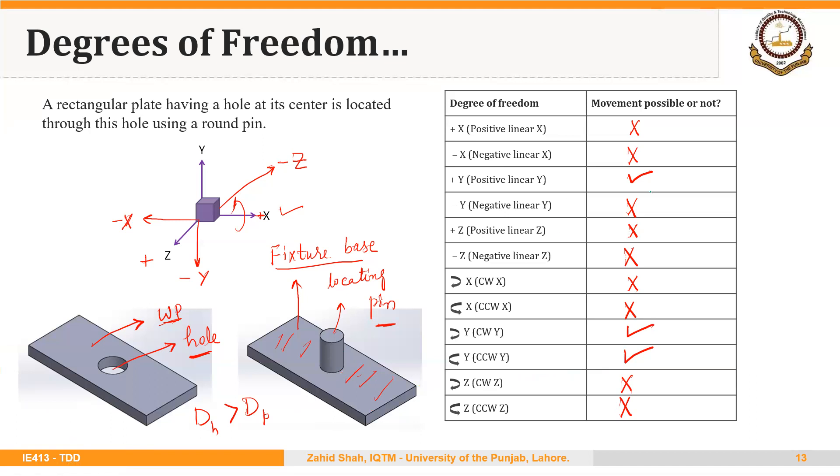Linear upward in Y and rotation about the Y axis are not restricted. The rest of the degrees of freedom—the remaining nine—are restricted.